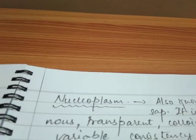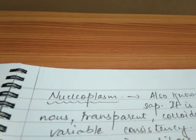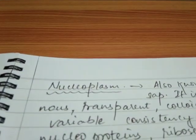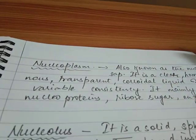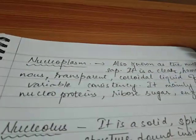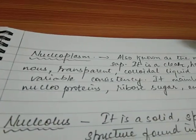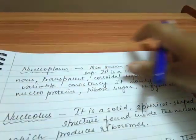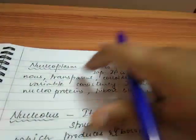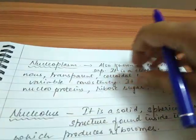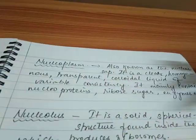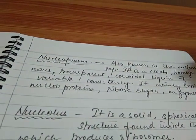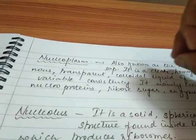Next is nucleoplasm. The cell has a homogeneous matrix fluid in it known as the cytoplasm. Similarly, the nucleus also has a homogeneous transparent colloidal liquid with variable consistency, which is known as the nuclear sap or nucleoplasm. You can say that the nucleoplasm is the inner lamina of the nucleus, just as the cytoplasm is the inner lamina of the cell, where different materials are present to perform different functions.